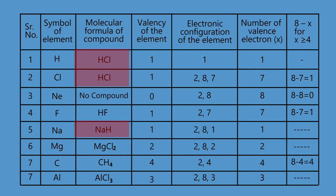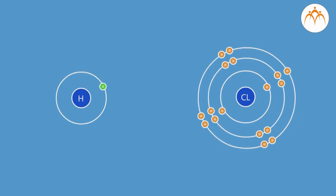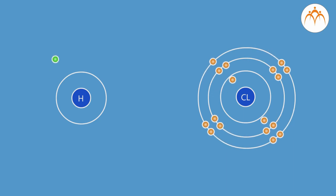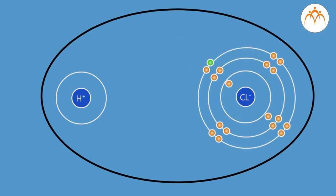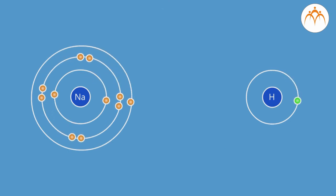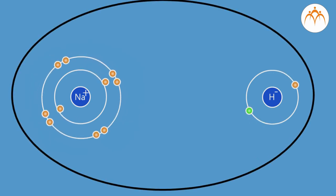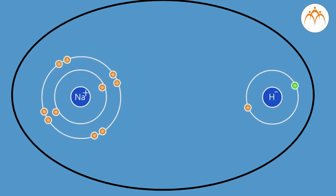Is the valency of hydrogen in HCl and NaH the same? In HCl, valency of hydrogen is 1+, whereas in NaH it is 1−. The electronic configuration of Cl is 2,8,7. One electron from H is shared by chlorine, making its configuration 2,8,8. Thus, hydrogen ion acquires a positive charge when HCl is formed. Whereas in NaH, electronic configuration of Na is 2,8,1. Na donates its one valence electron to hydrogen. Thus, octet in Na and duplet in hydrogen is completed, and Na+ and H− ions are formed — hydrogen acquires a negative charge in NaH.